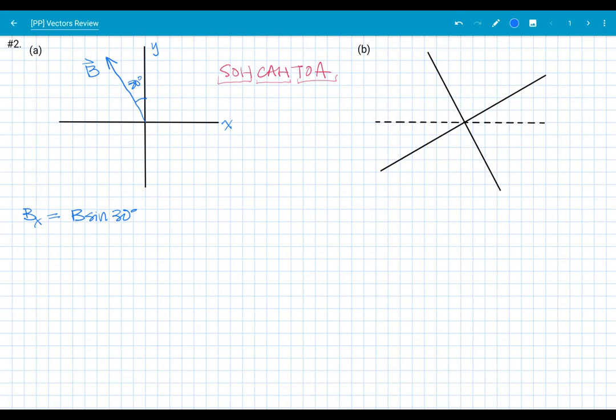So my x component is B sine 30 degrees. In this case, that's 5 meters times the sine of 30 degrees, which gives me 2.5 meters there. My y is just going to be the magnitude of B times the cosine of 30 degrees. So that's 5 meters times cosine 30 degrees, and that gives me around 4.3 meters. So that's the x and y components. That's what they're asking for here for that coordinate system.